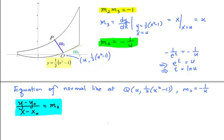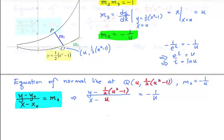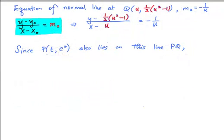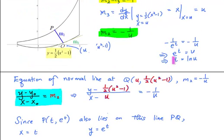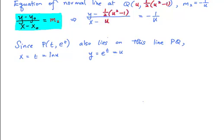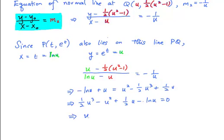To get the straight line equation of PQ, we use the point-slope formula where (x0, y0) is the point Q and m2 is the gradient of PQ. Since point P also lies on this line, we substitute the coordinates of P into this equation. Our earlier result shows e^t equals u and t equals ln u, so x equals t equals ln u and y equals e^t equals u. Substituting these values and simplifying, we obtain the required equation. We are done with part A.